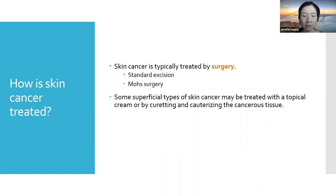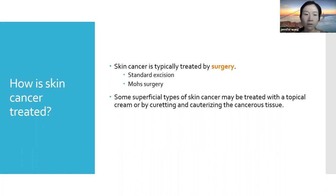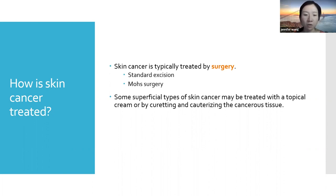Mohs surgery is a special technique where the surgeon removes only small pieces of tissue at a time and checks them under the microscope in real time while you're still in the office, to make sure they are completely around the skin cancer. If the margin is not clear, they will continue to take small pieces until the skin cancer has been completely removed. This surgery has the benefit of keeping the wound as small as possible, which is important for areas like the face, ears, fingers, or lower leg where there may not be a lot of excess skin. Mohs surgery also ensures that margins are completely clear at the time of surgery.